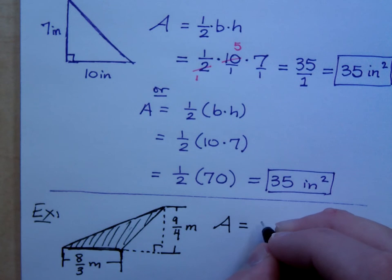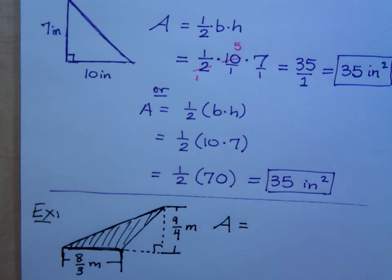It's what? Base times side is the area for a parallelogram or for a rectangle. But for a triangle, the triangle is only half of that. So, it's half of the base times the height.